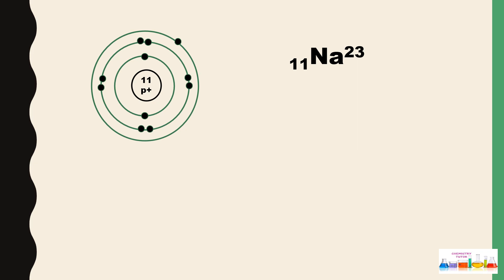Let's take the example of sodium. We know that the atomic number of sodium is 11 and mass number is 23. This means that the number of protons is 11 and the number of electrons is 11, because the number of electrons is always equal to the number of protons.